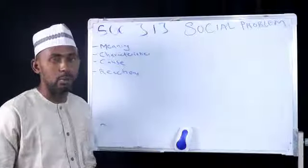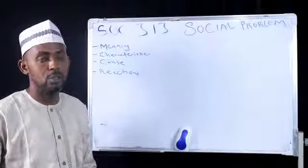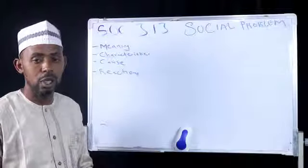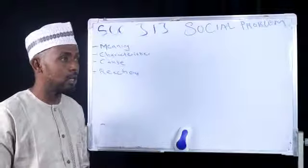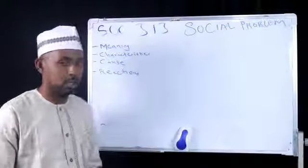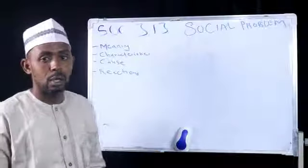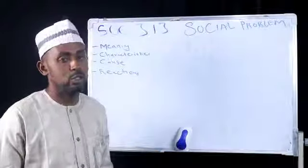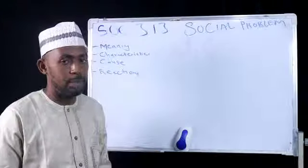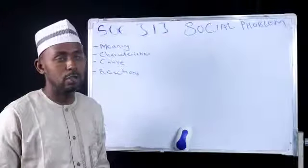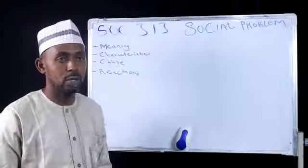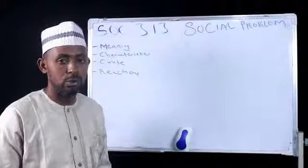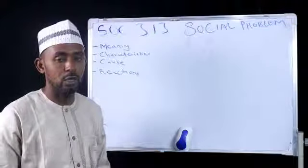What is social problem? You can define social problem from your own point of view. A social problem is any problem that can cause havoc or damage to the society. These problems are many and include problems like prostitution. Prostitution is one of the social problems that we see developing in our society today.